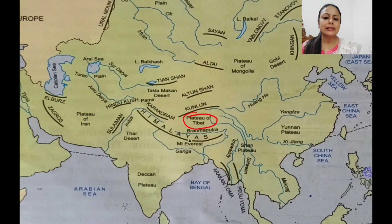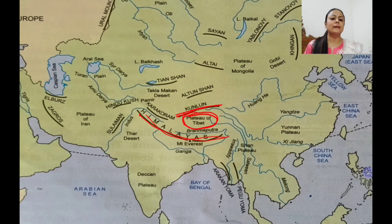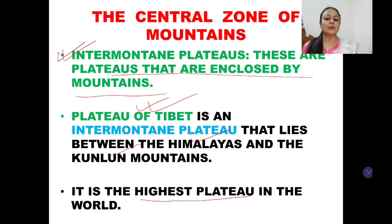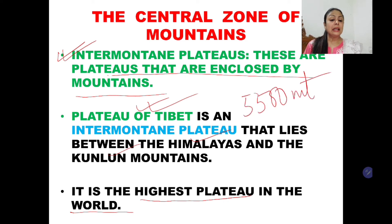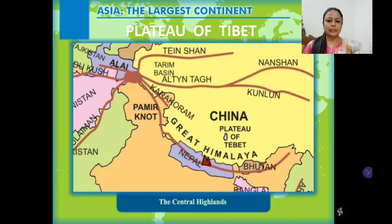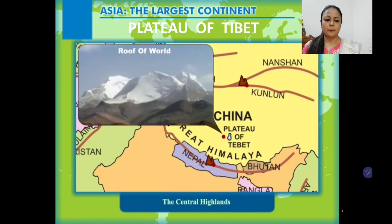On the map, you can see the Plateau of Tibet with Kunlun to the north and Himalayas to the south. It is an intermontane plateau because it is surrounded by mountains. Notably, this is the highest plateau in the world, with an average height of 5,500 meters above sea level — you can imagine how elevated it is.